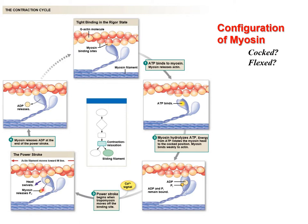ATP has only an indirect role in transitioning from cocked to flexed. Year after year students say we hydrolyze ATP to get the power stroke — that's not true. The figure shows we're already hydrolyzed before the power stroke. The only difference between the cocked and flexed frames is that we've released inorganic phosphate; we still have ADP. The hydrolysis happens earlier: here we have ATP, and by the next step we have ADP and Pi.